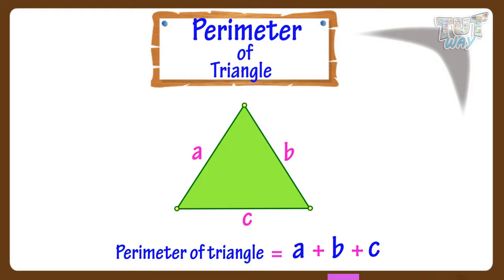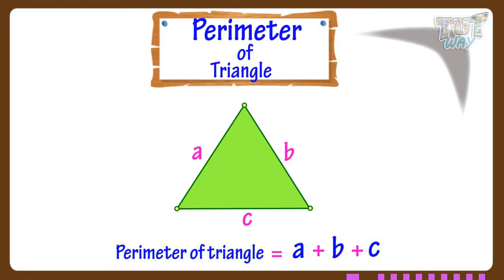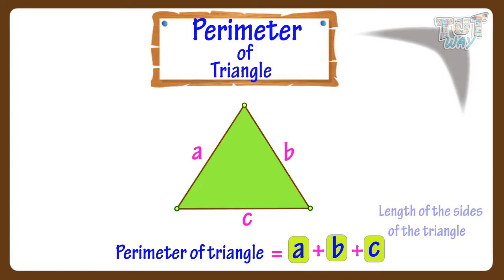So the formula for finding the perimeter of a triangle is A plus B plus C, where A, B, C are the lengths of the sides of the triangle.